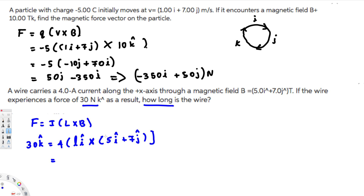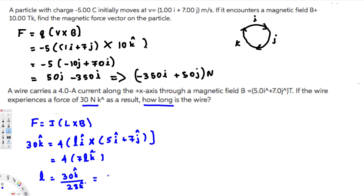Now let's cross: i cross i is zero, so we can eliminate that part. i cross j is positive k, so the j component gives us positive k. This works out to 4 times 7L in the k direction, which is 28L k. Since the force is 30k, we divide: L = 30k / 28k, which gives us approximately 1.07 meters. That's the answer.